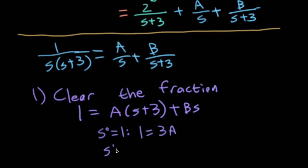I'll have 1 on the left-hand side equaling 3A on the right-hand side. And now if I match up all of the s to the power of 1 terms, I'll wind up with 0 on the left-hand side because there's no s terms over here on the left. And I wind up with A plus B. I'm getting an A from here and a B from here. So this is pretty easy to solve. I wind up with A is equal to one-third and B is equal to minus a third.